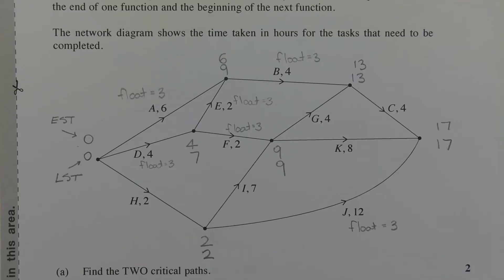So let's determine the float time of each task. If we look at task J. Seventeen. So take the LST after the task, subtract the time that the task takes. So seventeen minus twelve. Then subtract the EST before that task. So seventeen minus twelve minus two gives us a float time of three. So J is not on the critical path. Let's look at K. Seventeen. So LST minus the activity time minus eight, minus nine gives us zero. So K is on a critical path.